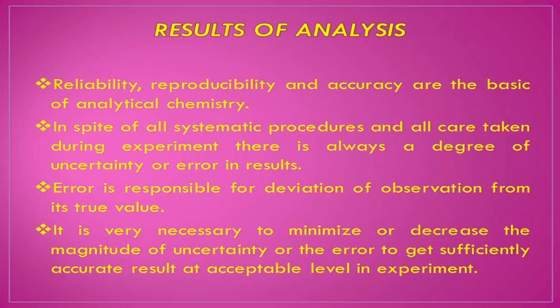So what is our job now? Our error should be minimum. It is necessary to minimize or decrease the magnitude of error. Magnitude means it is a quantity, and that quantity should be minimized or removed. It is not always possible to remove the error completely or 100%. We can minimize it to get a sufficiently accurate result at an acceptable level of experiment. For error, there is always some acceptable level — up to that level, we can accept the error in our final results.